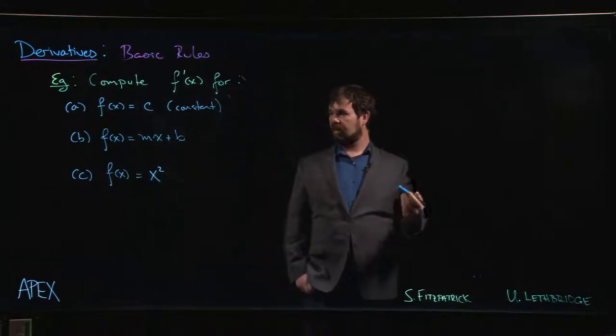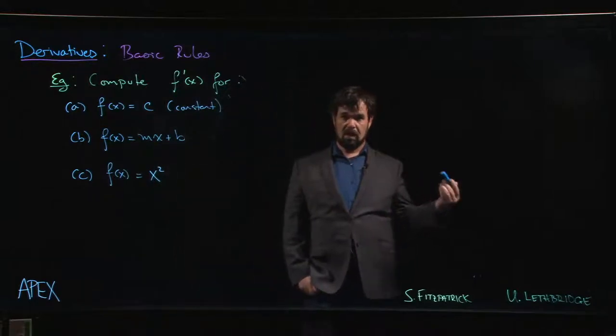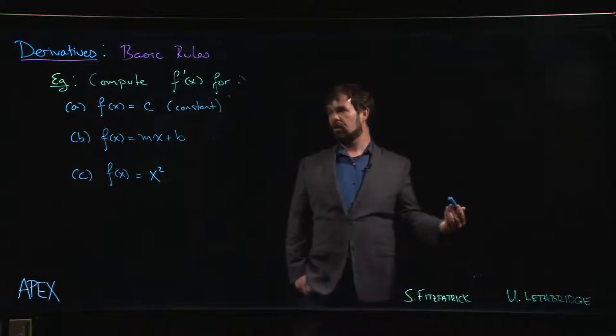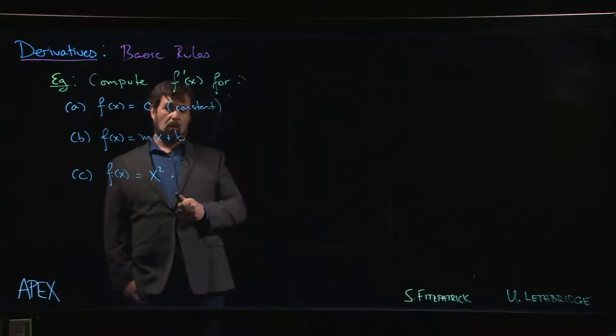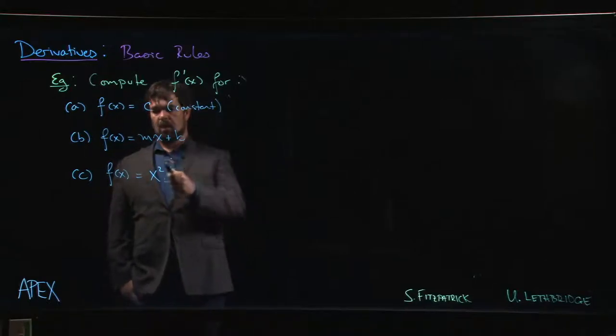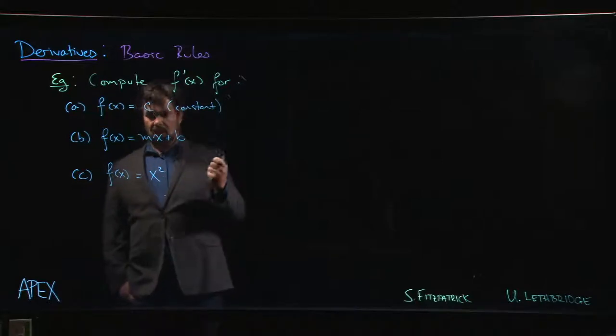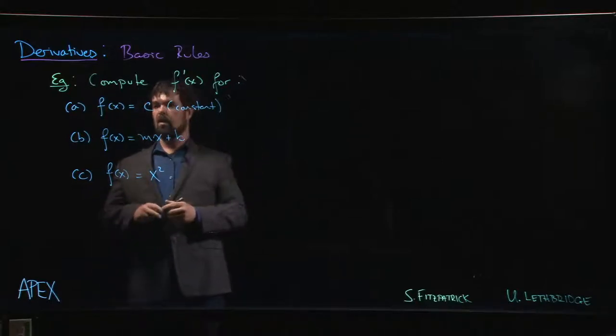So we can already guess: every horizontal line has slope 0, so we expect the derivative to be 0. Here we know that the slope is m, so we expect the derivative to be m. If we want to see that, well, in the first case...